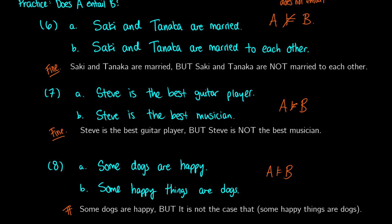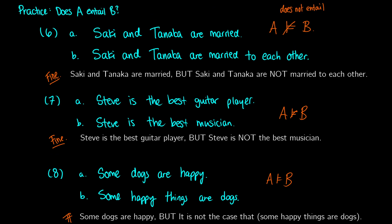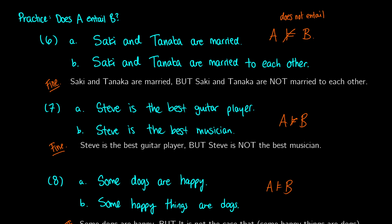These examples show how some cases mess with your intuition — specifically 6A, because of conversational norms. According to conversational norms, when you say 'Saki and Tanaka are married,' it's implied they're married to each other. However, entailment is not about what we expect — it's about what's logically true. So it doesn't have to be logically true that they're married to each other; it's only an expectation. Hopefully this video helps you understand entailment in linguistics. If you have any questions, leave them below, and I hope to see you in the next one.